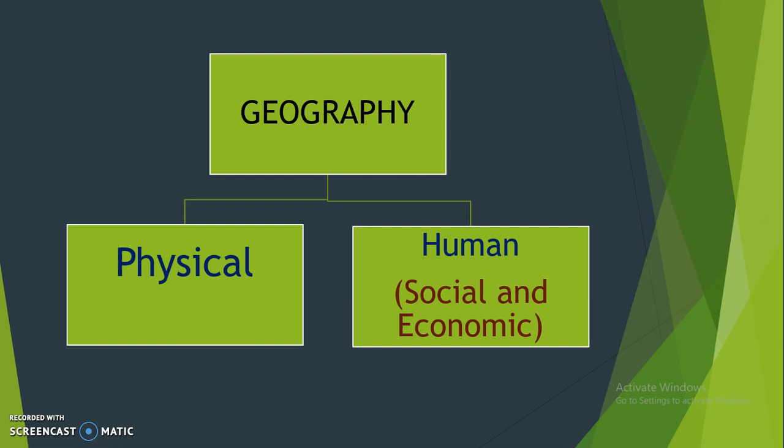Human Geography is social and economic. In social, we learn population and migration. In economic, we learn activities like agriculture, industries, and transportation. This is the first unit of Economic Geography — we learn about physical and human.